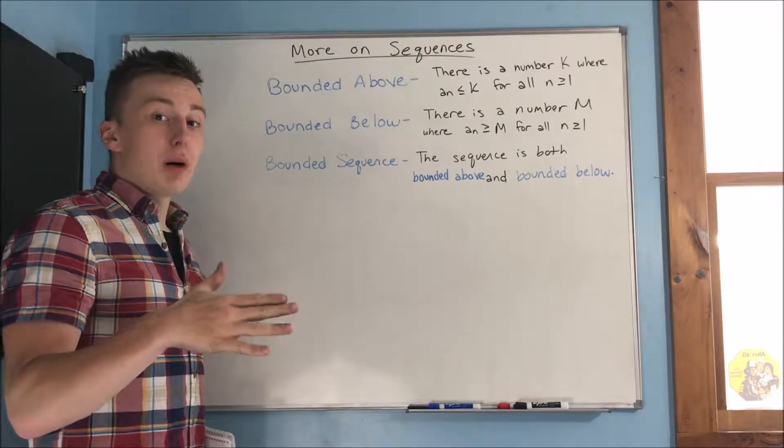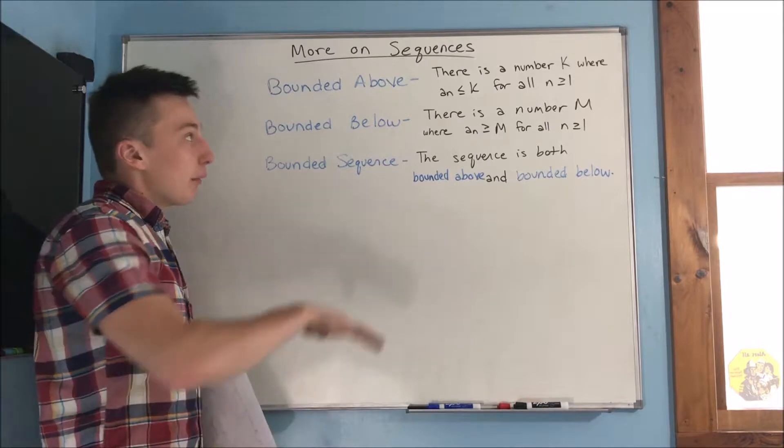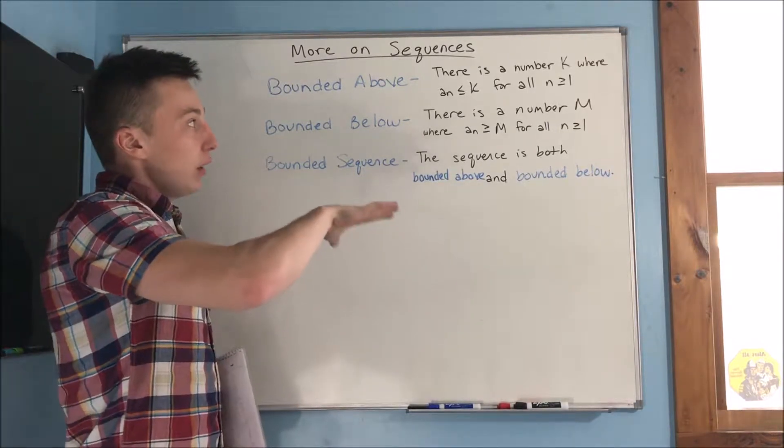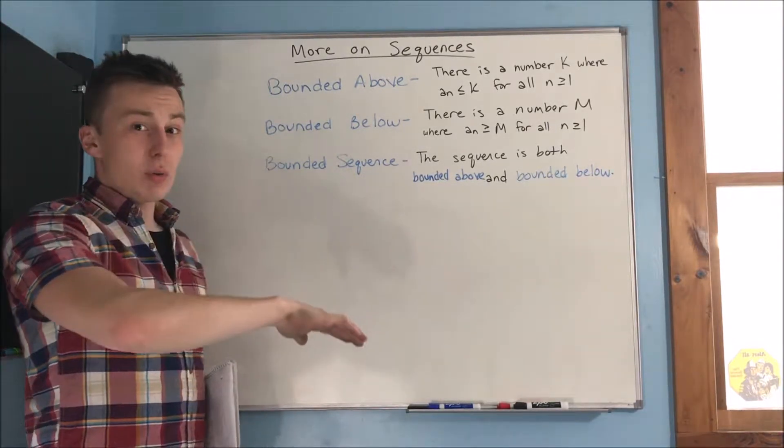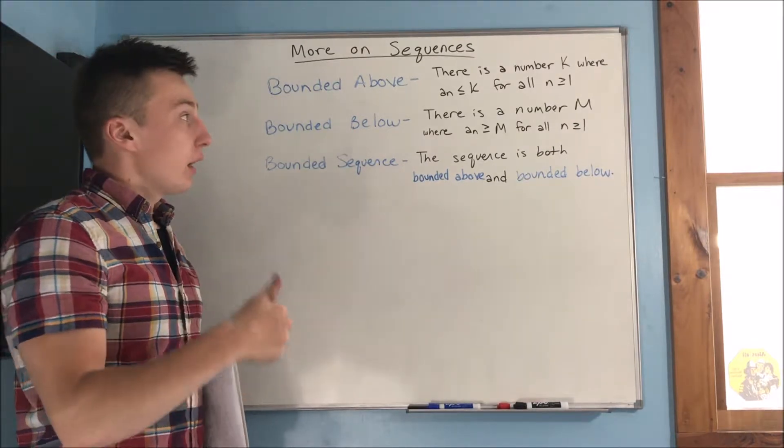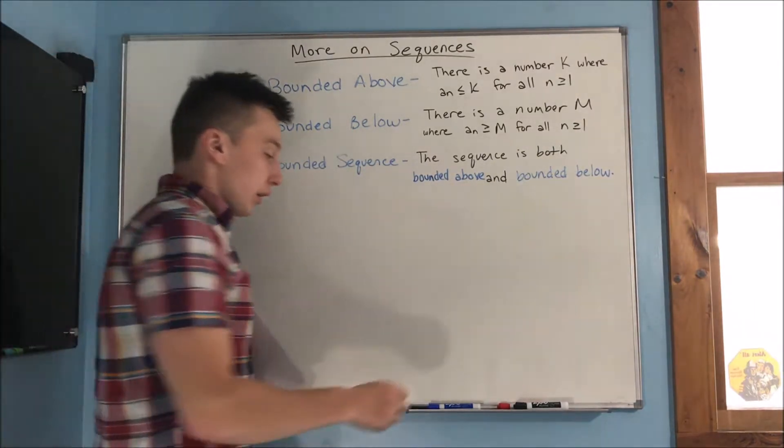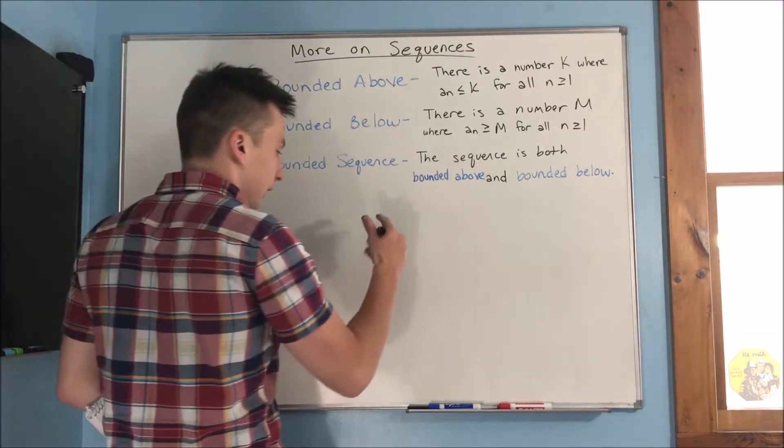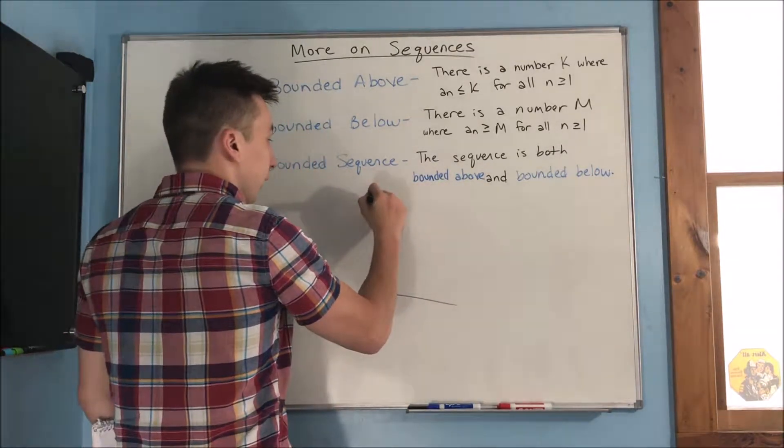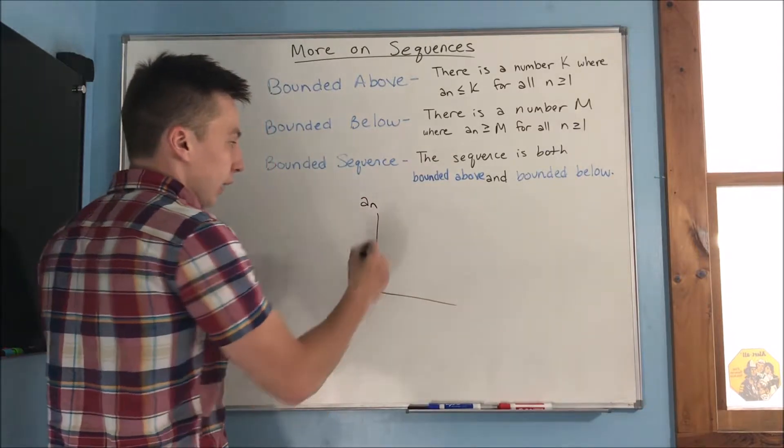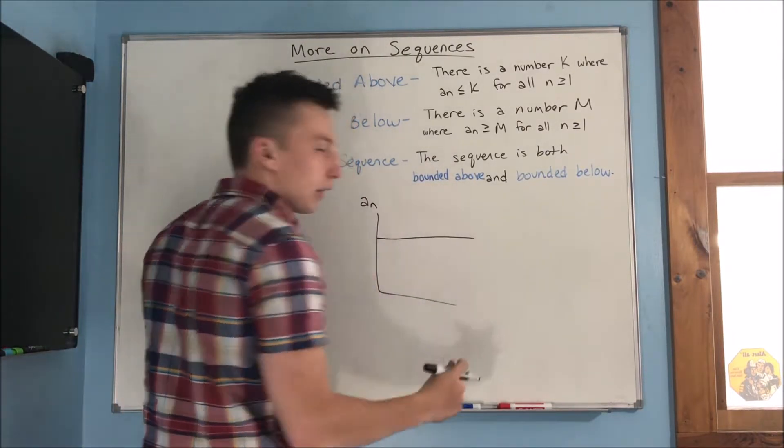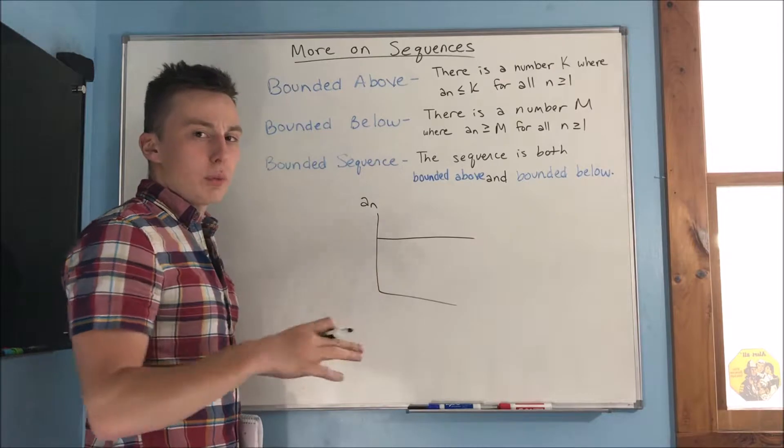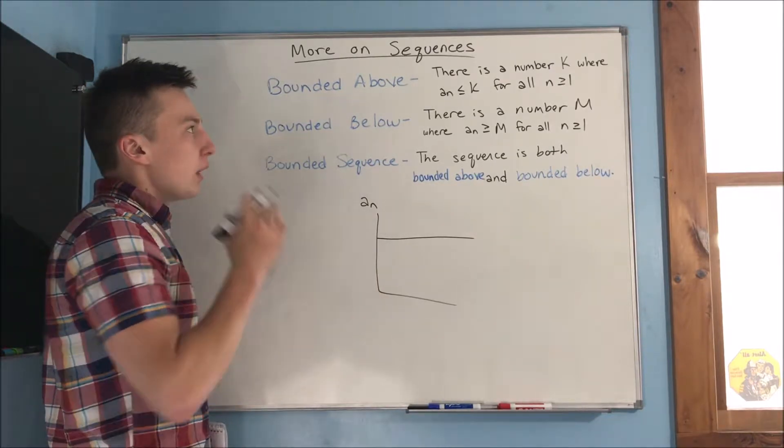So, a sequence is bounded above. It's going to be bounded above if there's a number k, where a sub n is always going to be less than or equal to k, for all n is greater than 1. So, what we're talking about here is, if we have an a sub n here, and we have that, it's kind of like what we had with L when we were talking about our limit stuff.